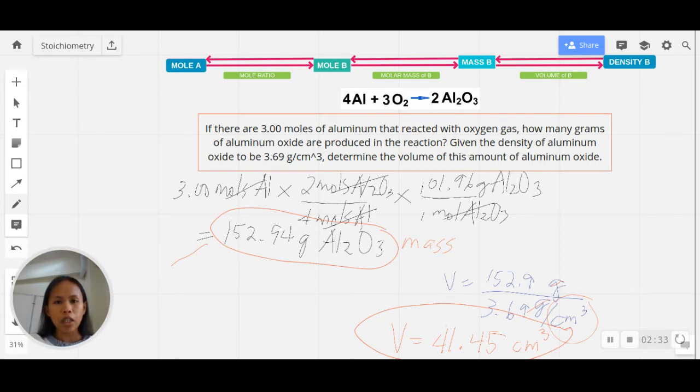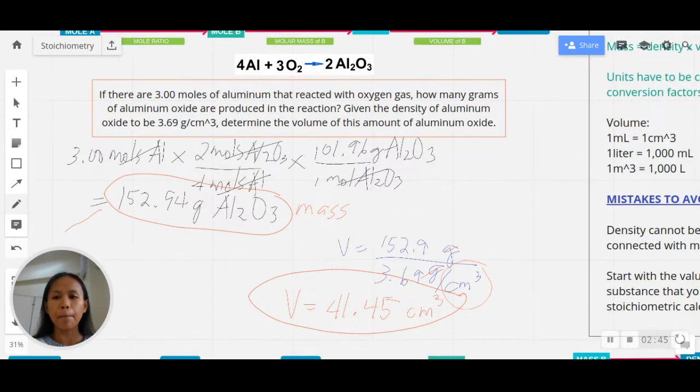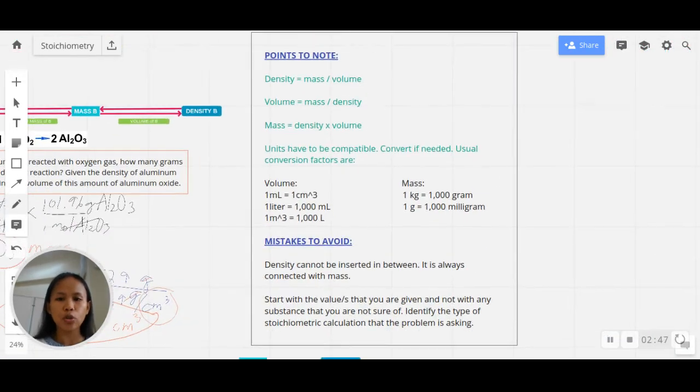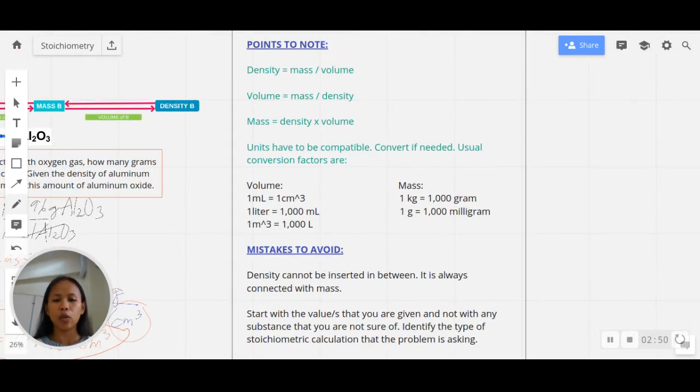Remember that density can come at the end of the computation or at the start, but both densities are attached to mass or physical quantity in the stoichiometry roadmap. Let me give you some points to note and mistakes to avoid if you're dealing with density-related stoichiometric problems. These are the points to note: remember that density is always mass over volume, volume is mass over density, and mass is density times volume.